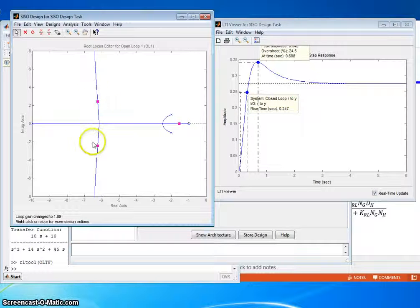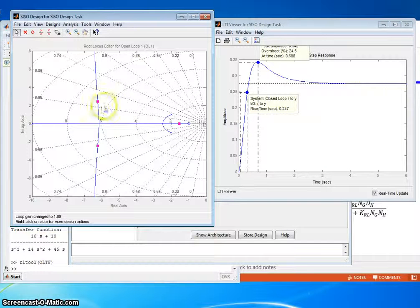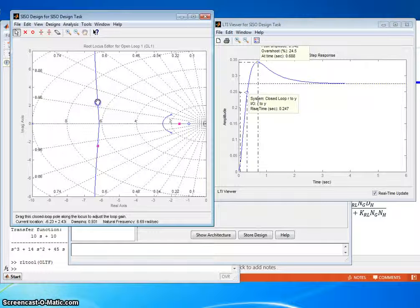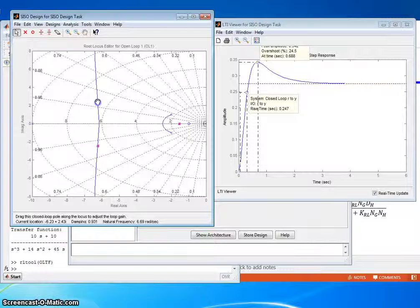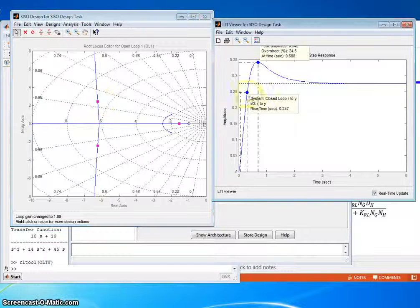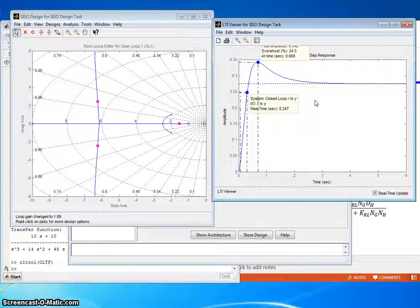When I'm satisfied, I used a KRL of 1.89. I can put my grid here and see what the damping ratio and natural frequencies are, or I can see that it's 0.93 for the damping ratio and natural frequency of 6.69, and the KRL value to get that there was 1.89, and this would be the corresponding step response to that controller.